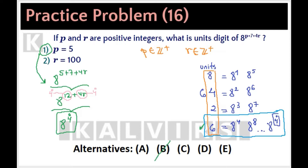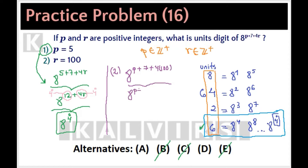Alternatives A, C and E are eliminated. From statement 2 alone, R is 100. We have 8 to the P plus 7 plus 4 times 100, which is 8 to the P plus 7 plus 400, and finally 8 to the P plus 407. Since we don't know the value of P, the unit digit of this power can be either 8, 4, 2, or 6.